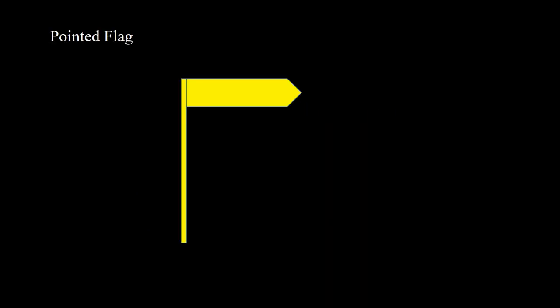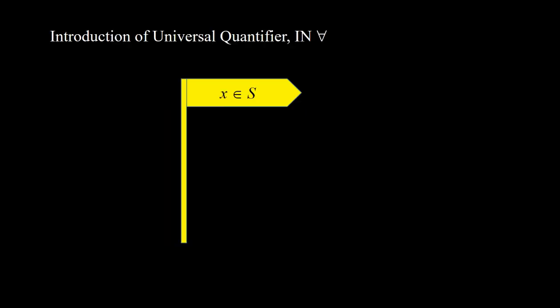Deduction using flags for quantifiers. We introduce the pointed flag with a pole. We usually put this kind of expression in the pointed flag and we can copy the expression in the flag to its scope. Introduction of universal quantifier — we use this notation in reasoning. If we have a pointed flag with a pole, and the expression x ∈ S in the flag, and we have p(x) under the flag, then we can have ∀x ∈ S p(x) under the pole.